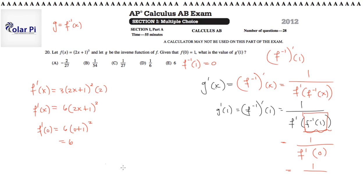So this is going to equal 1 over f prime of 0, which is, as we just calculated, 6. So the answer to this should be 1 over 6.